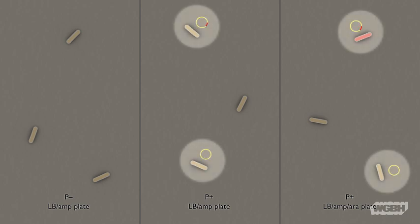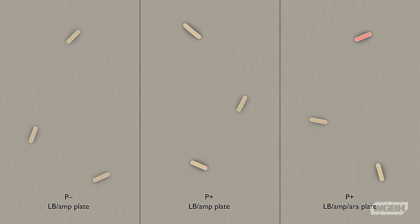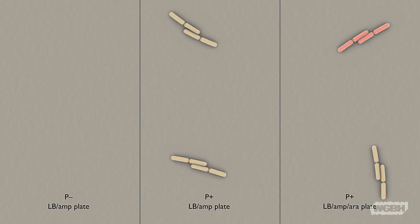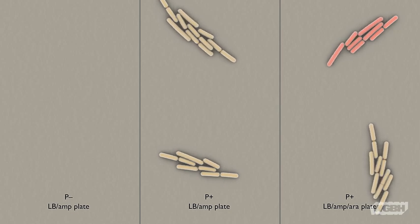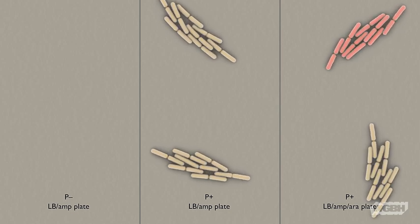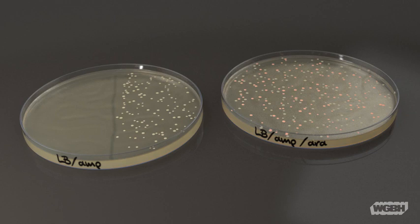After a 24-hour incubation period, any cell that was transformed with plasmid survives and divides to form a colony in the presence of the antibiotic ampicillin. However, only cells that were transformed with plasmid and grown in the presence of ampicillin and arabinose will result in red colonies. We expect these red colonies to have synthesized the mutant fluorescent protein MFP.